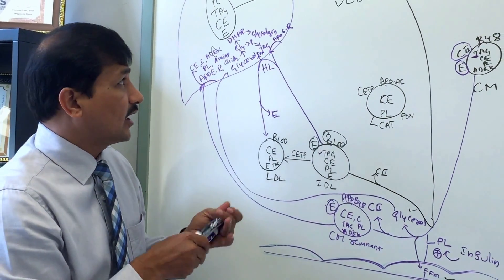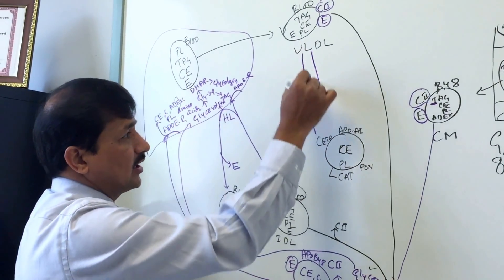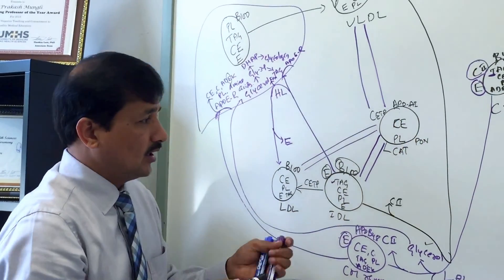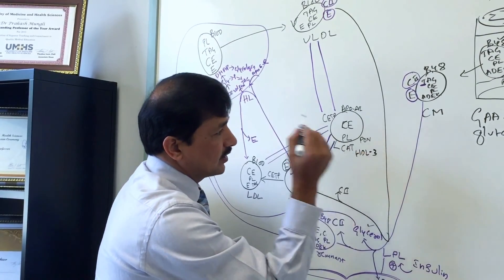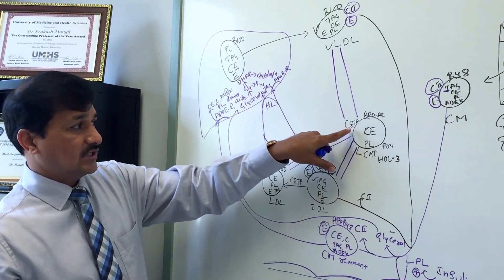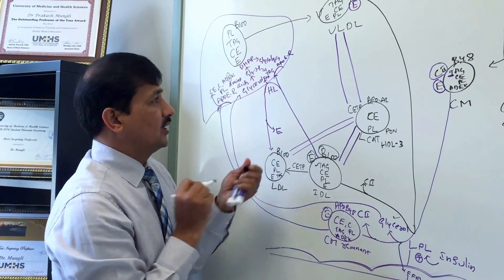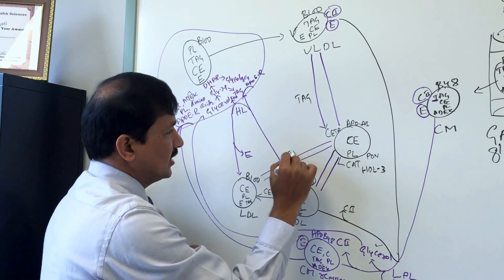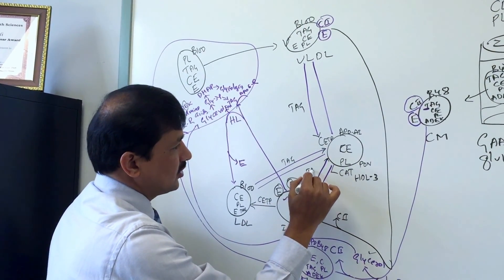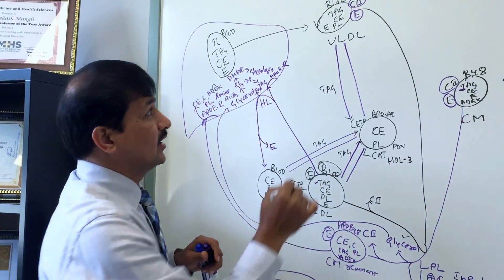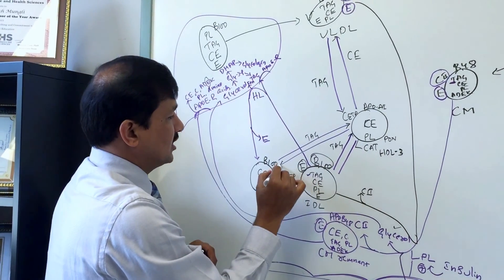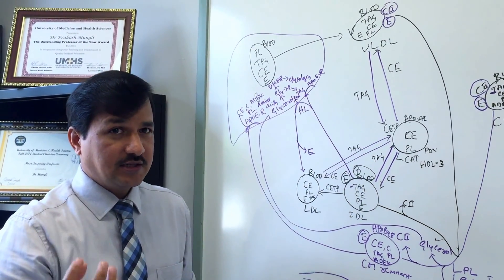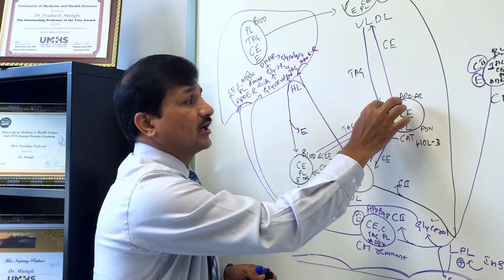The CETP present on HDL3 interacts with VLDL, IDL, and LDL. What CETP does is take triacylglycerol from VLDL, from LDL, and from IDL. In return, it gives cholesterol ester to VLDL, cholesterol ester to LDL, and cholesterol ester to IDL. So all three molecules receive cholesterol ester from HDL3, and in return they give triacylglycerol — that is the function of cholesterol ester transfer protein.